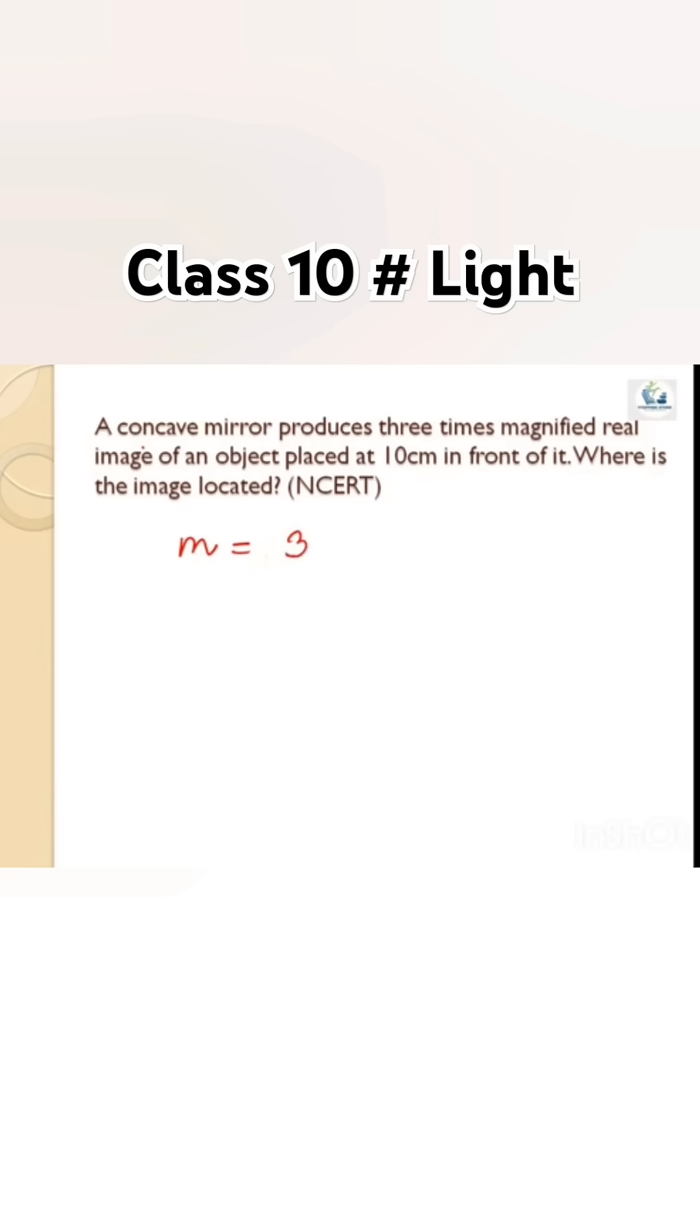A real image is always inverted, so we have to make the measurement downward. By sign convention, this downward measurement means we give it a minus sign.